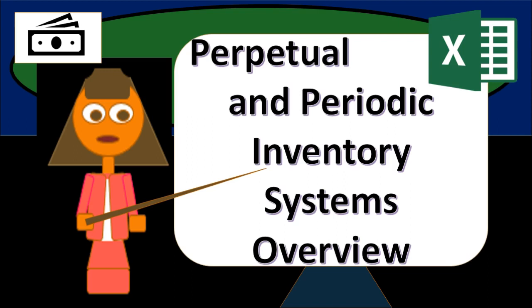In the perpetual and periodic inventory system overview, we will be taking a look at the two merchandising systems: the perpetual system and the periodic system.